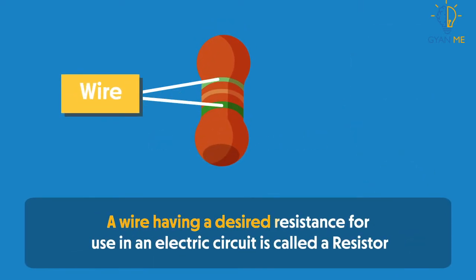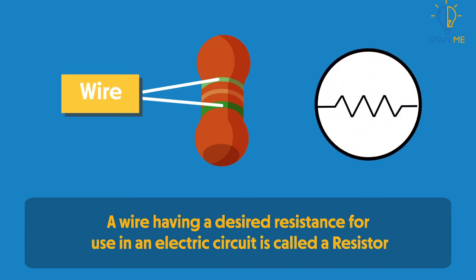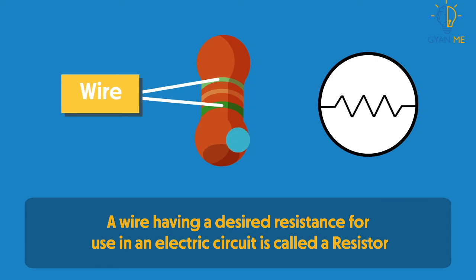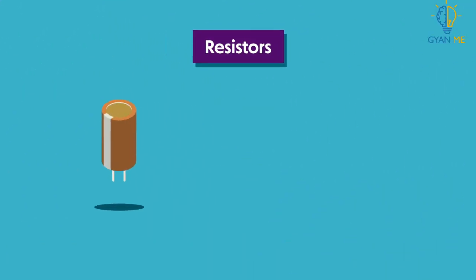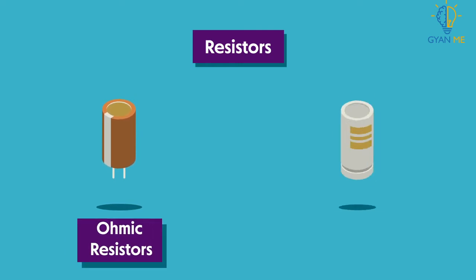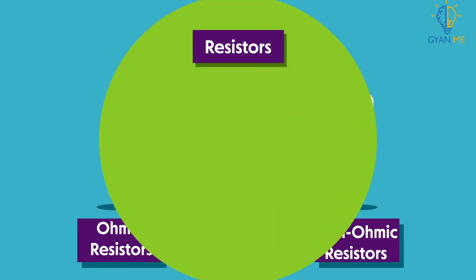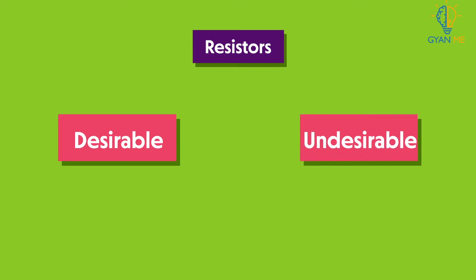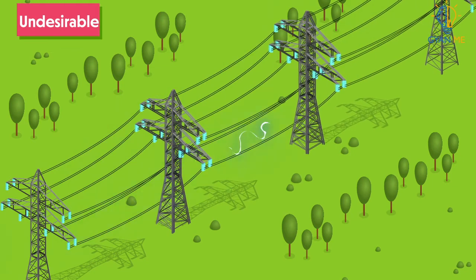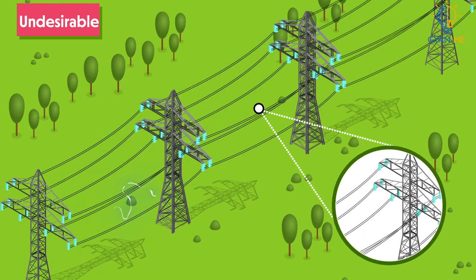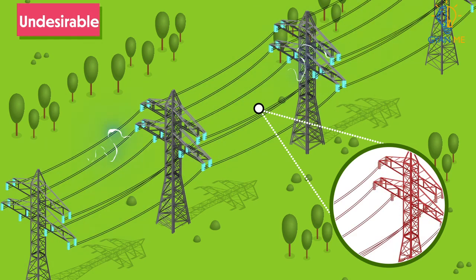A wire having a desired resistance for use in an electric circuit is called a resistor. We represent it by the symbol of a zigzag line. The resistors which obey Ohm's law are called ohmic resistors, while the resistors which do not obey Ohm's law are called non-ohmic resistors. Note that the resistance produced by resistors can be either desirable or undesirable. If we want to transmit electricity from one place to another, the resistance is undesirable, because resistance in a conductor causes a part of electricity to turn into heat, so some electrical energy is lost along the path.